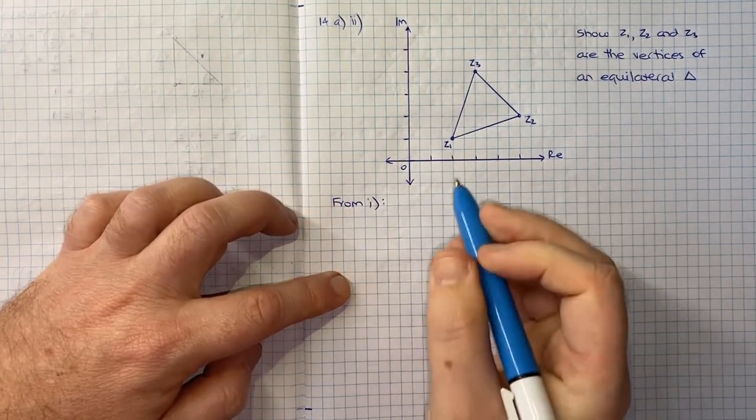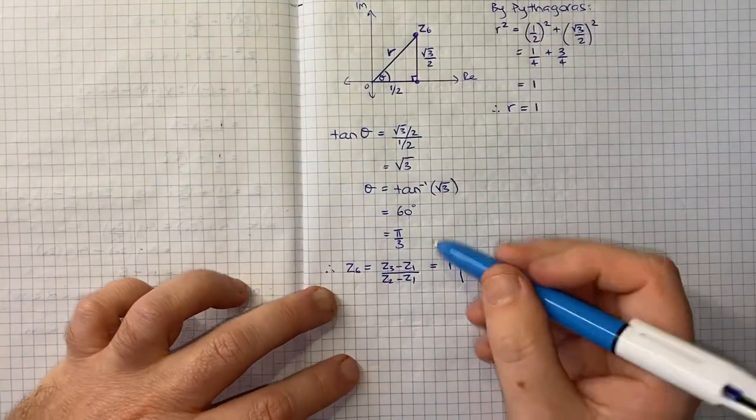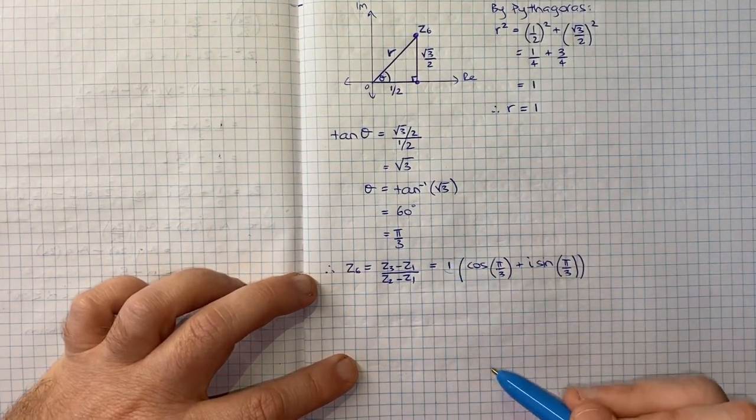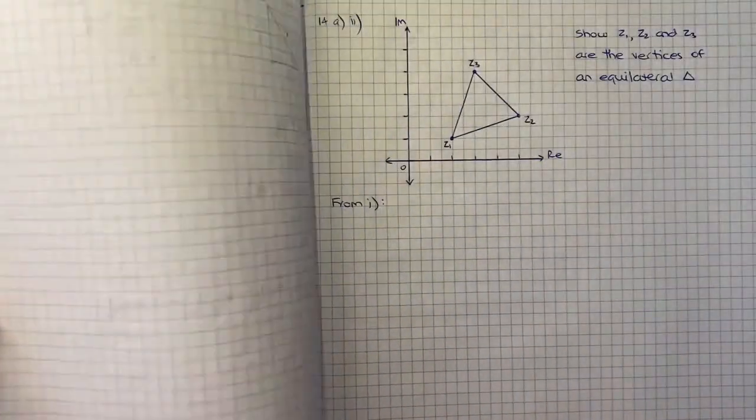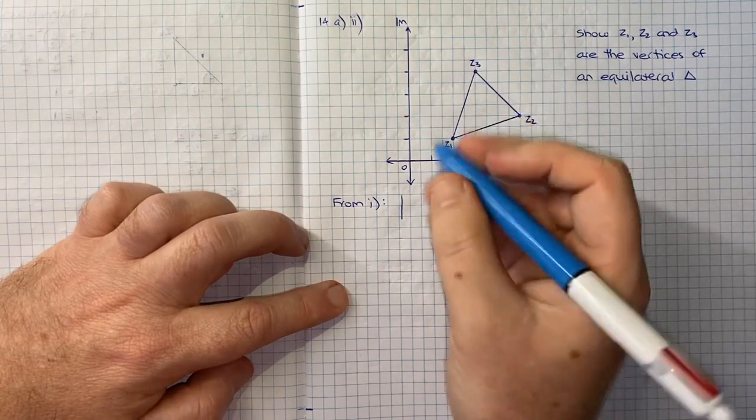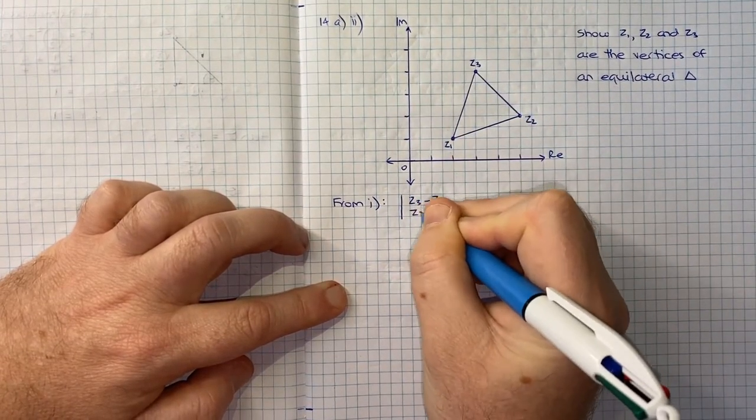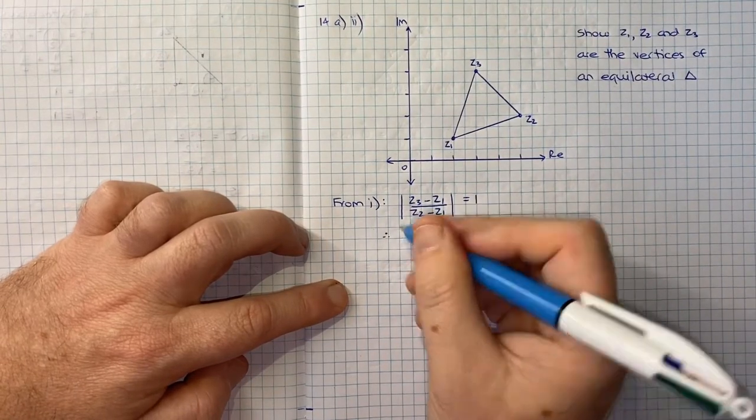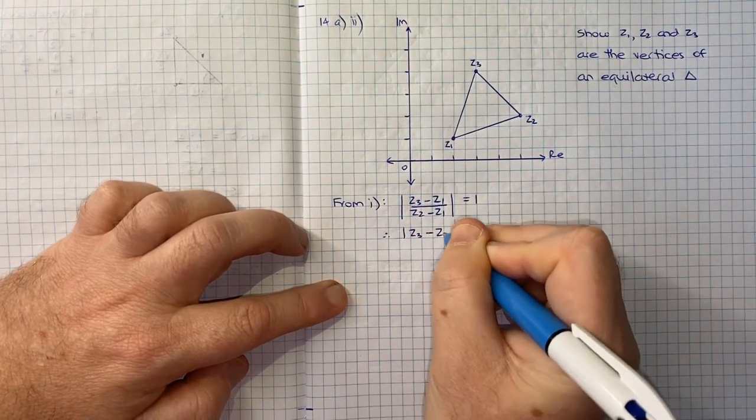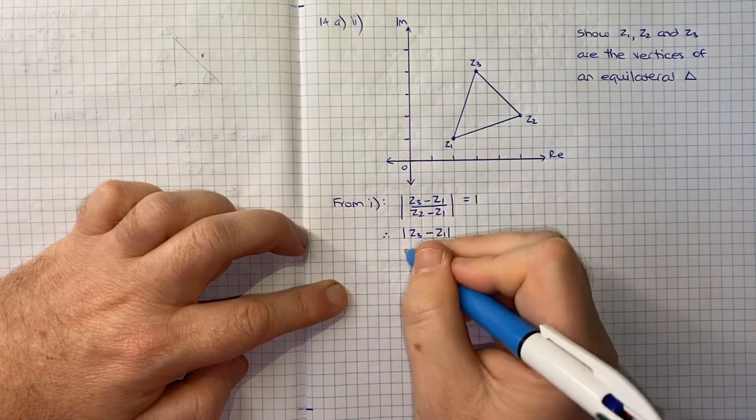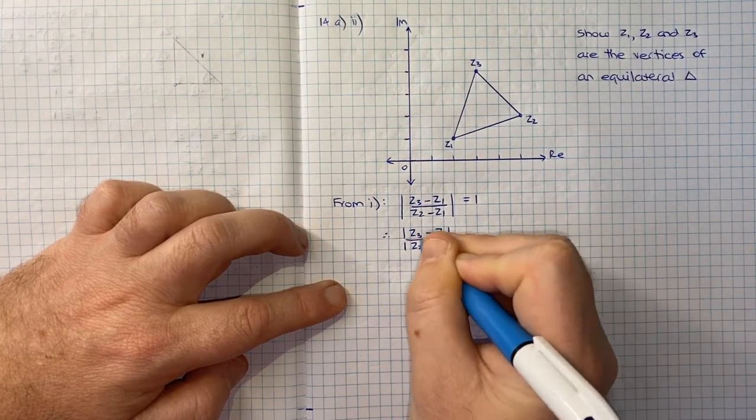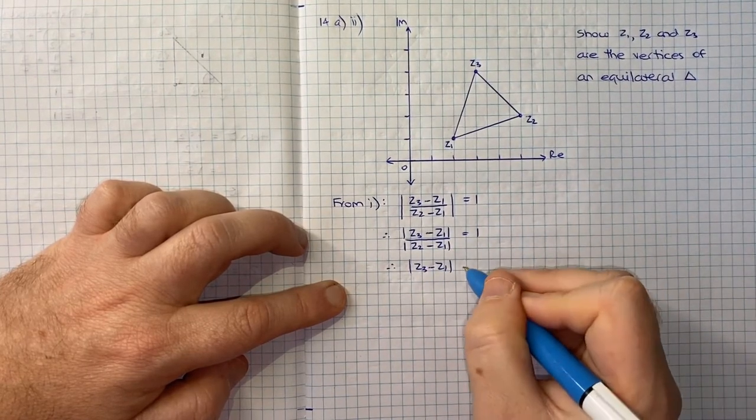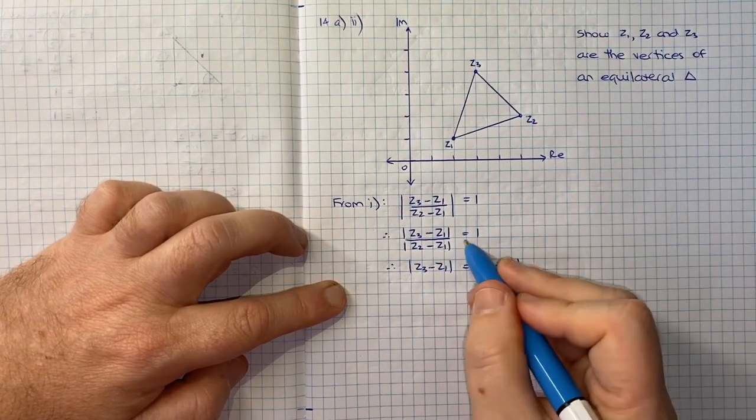And I think the first result that we can use from part 1 is that the modulus of this Z3 minus Z1 on Z2 minus Z1, the modulus is equal to 1. So what we could write is the modulus of Z3 minus Z1 on Z2 minus Z1, that's equal to 1. And so from that, we can conclude that the modulus of Z3 minus Z1 divided by the modulus of Z2 minus Z1 is equal to 1. And so therefore, the modulus of Z3 minus Z1 is equal to the modulus of Z2 minus Z1, because I've just multiplied this up.